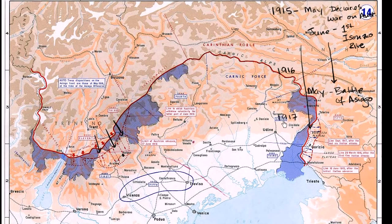As we enter into 1917, several interesting things are happening. On the Eastern Front, the Russians are starting to fall apart — they're having revolutions at home and losing on the Eastern Front. This allows the Germans to redeploy some troops. Also at this point, Italy is formally at war with the Germans. So as we get to October of 1917, the Austro-Hungarians are able to get reinforced by the Germans.